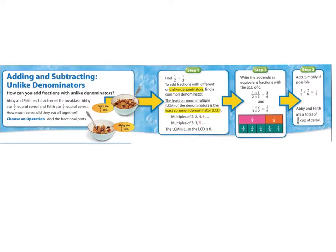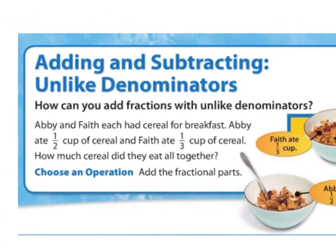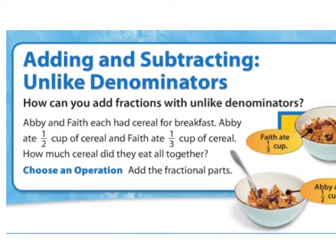Let's zoom in on our first example. Adding and subtracting unlike denominators. How can you add fractions with unlike denominators? Abby and Faith each had cereal for breakfast. Abby ate a half cup of cereal, 1 divided by 2 cup of cereal, and Faith ate one-third cup of cereal. How much cereal did they eat altogether?